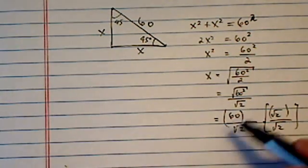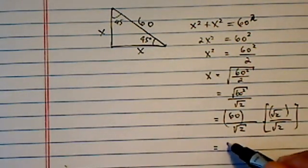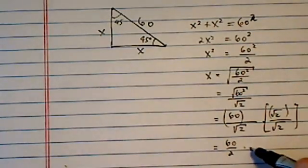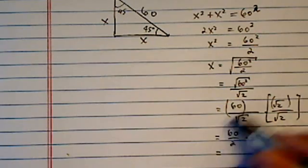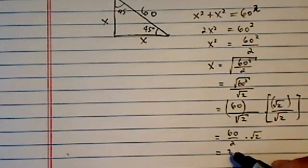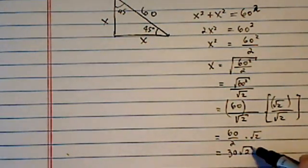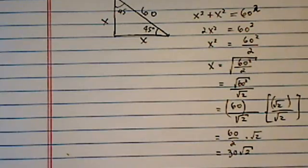However, if you do this little thing called rationalizing the denominator, it becomes very easy to multiply radical two. So the answer here is thirty times radical two.